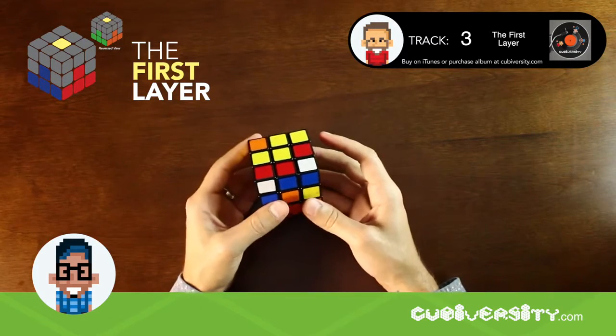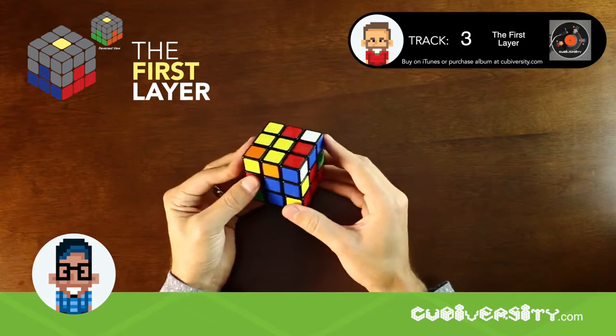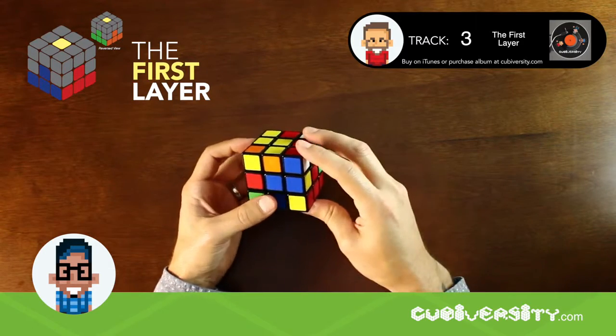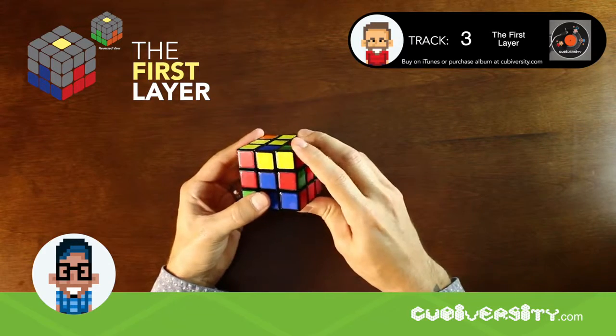Here's another corner piece. This one is facing to the right. Perform this algorithm with the right hand. R, U, R prime.